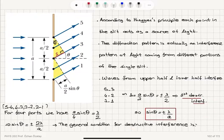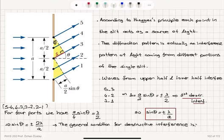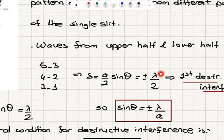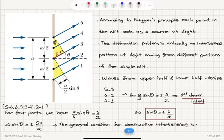For rays five and three, the path difference is a over two sine theta. When a over two sine theta equals plus or minus lambda over two, we get the first destructive interference, indicating where the dark bands are observed. The two's cancel, giving sine theta equals plus or minus lambda over a — the angular position of the first dark band.